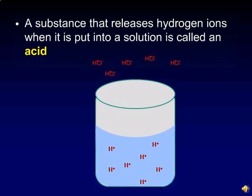Any substance that releases hydrogen ions when it is put into a solution is called an acid. For example, hydrochloric acid separates into hydrogen and chloride ions when put into solution. If we remove the chloride ions, just to make it easier to see, we can see that there are now more hydrogen ions in the solution. Therefore, hydrochloric acid increases the acidity of the solution.